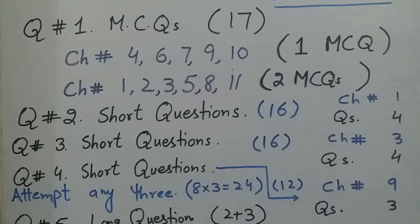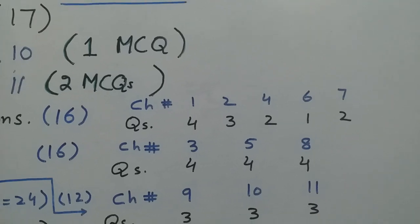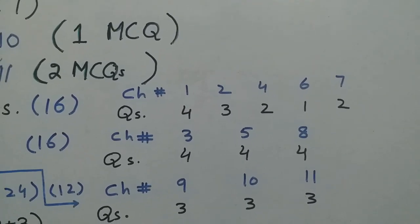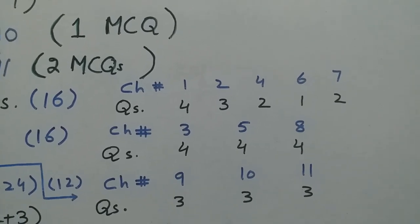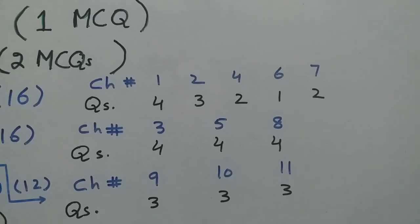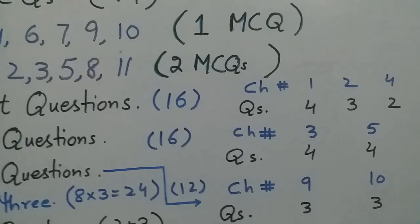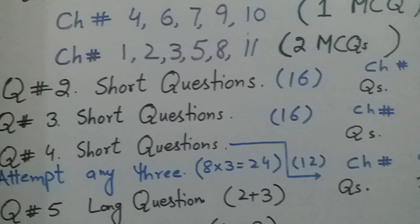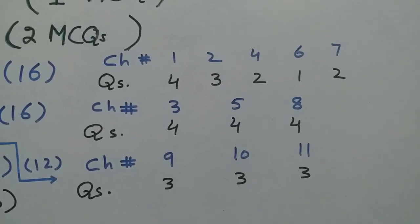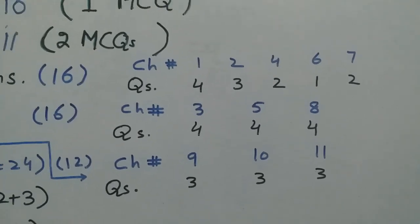Question number 2 consists of short questions worth 16 marks. You will have 12 total questions and must attempt 8. Chapters 1, 2, 4, 6, and 7 are covered in question 2. Question number 3 is also short questions worth 16 marks — 12 total, attempt 8 — covering chapters 3, 5, and 8. Chapter 3 has 4 short questions, chapter 5 has short questions, and chapter 8 has 4 short questions.